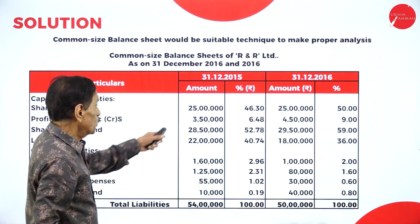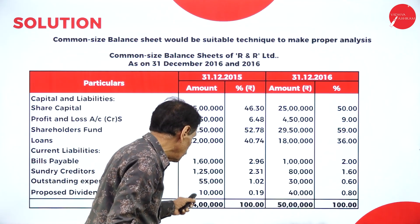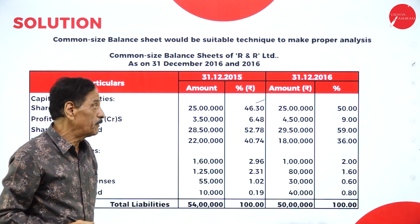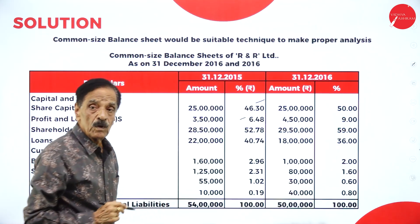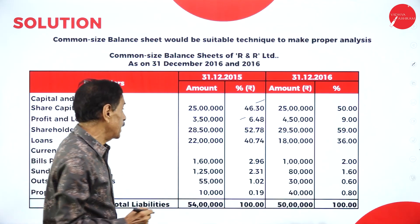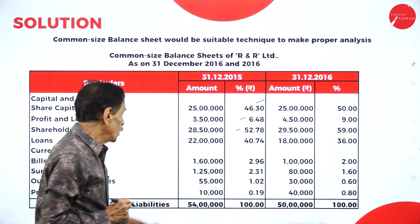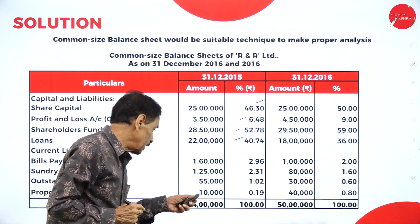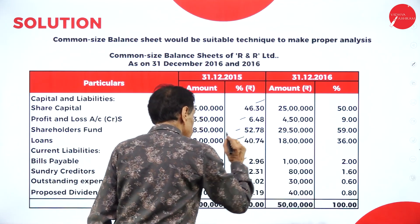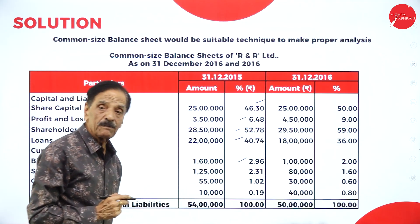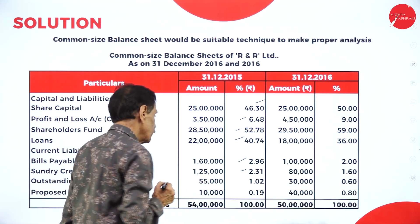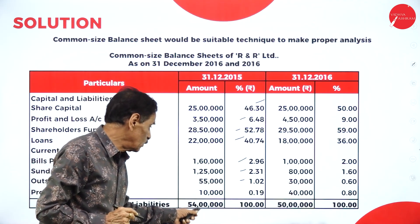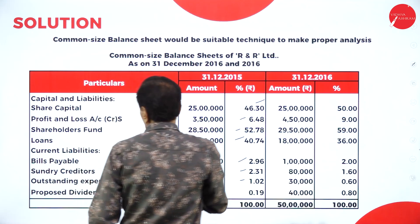So 54 lakh is equal to 100. 25 lakh divided by 54 lakh into 100 is 46.7. 3 lakh 50,000 divided by 54 lakh into 100 is 6.48. 28 lakh 50,000 divided by 54 lakh into 100 is 52.78. 22 lakh divided by 54 lakh into 100 is 40.74. 1 lakh 60,000 divided by 54 lakh into 100 is 2.96. 1 lakh 25,000 divided by 54 lakh into 100 is 2.31. 55,000 divided by 54 lakh into 100 is 1.02. 10,000 divided by 54 lakh is 0.19.